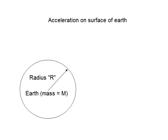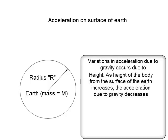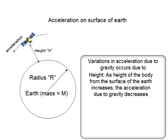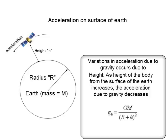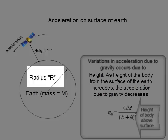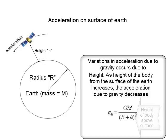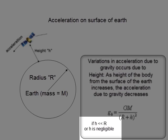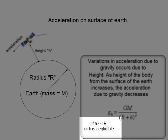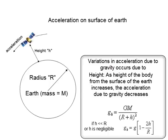Acceleration due to gravity is not constant. It varies as per three factors. As per height: as the height of the body from the surface of the earth increases, the acceleration due to gravity decreases. Hence, acceleration due to gravity at height H above the surface of the earth is given as g_H = GM/(R+H)², where R is the radius of the earth and H is the height of the body above the surface. If H is much much less than the radius of the earth, then g_H can be calculated as g(1 − 2H/R).